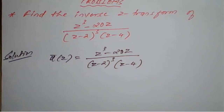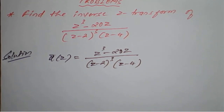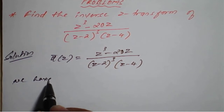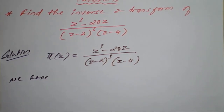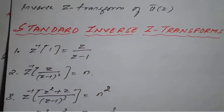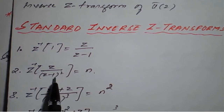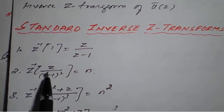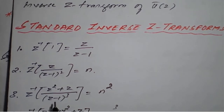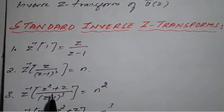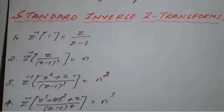We will apply direct steps to simplify this question using standard formulas. Referring to the formulas: Z/(Z-1)² — if a square comes, we can write (Z-1)². If (Z-1)³ is there, the numerator can be written as Z² - Z.